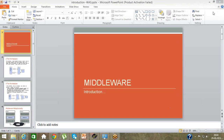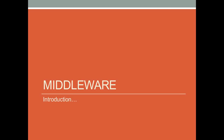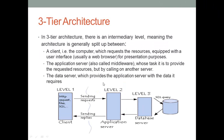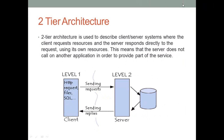When we talk about middleware architecture, earlier there used to be a kind of architecture called a two-tier architecture. In a two-tier architecture, there is a level one and a level two. Level one is essentially a client — anyone who is trying to send a particular request, such as an HTTP request sent via a browser.